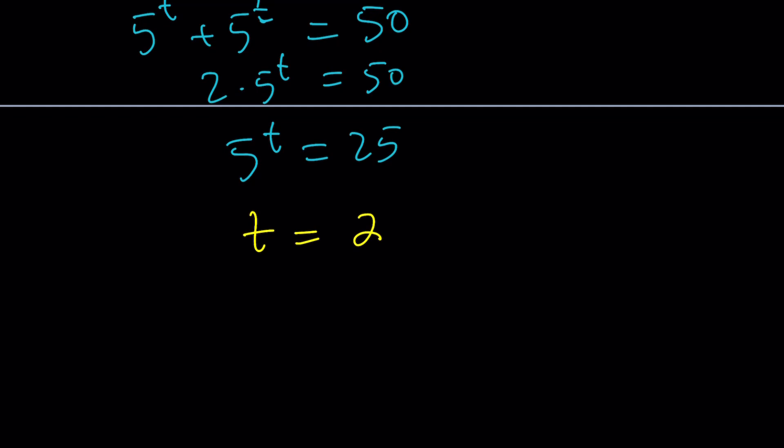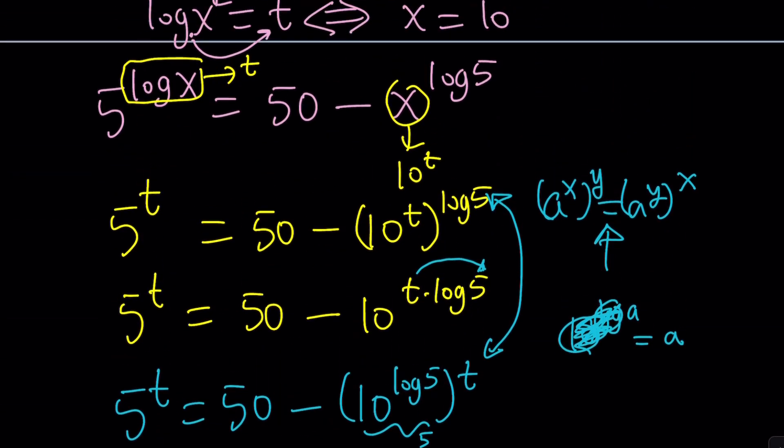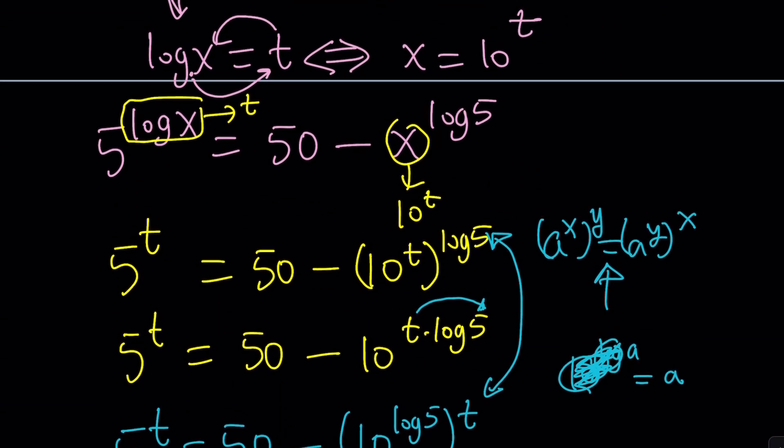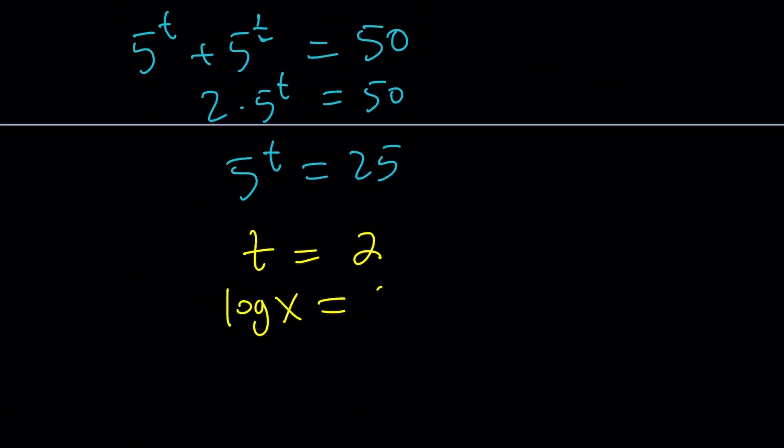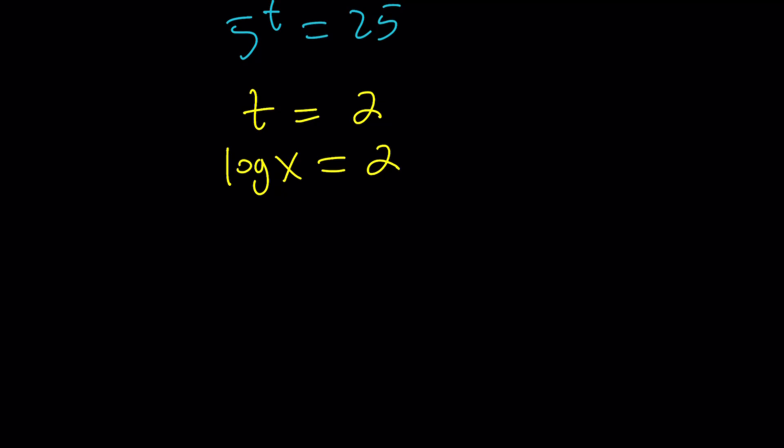And that gives us t equals 2. But t is not the end goal because t is log x. We're looking for x, aren't we? So set log x equals 2. And from here, again, by using the definition, basis 10, remember, 10 to the second power is x or x equals 100. Nice, right? Awesome.